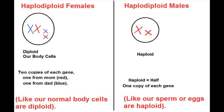Wasps, bees, and ants belong to an order of insects called the hymenoptera. Insects in this order have a genetic system called haplodiploidy. Haplodiploidy means that the males are haploid and the females are diploid. The way this occurs is that the eggs are produced by a female, and they can develop either into a male or a female naturally.